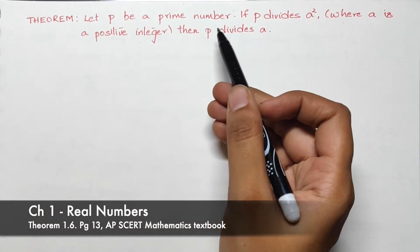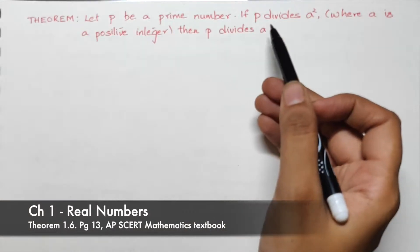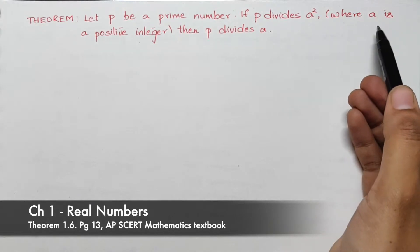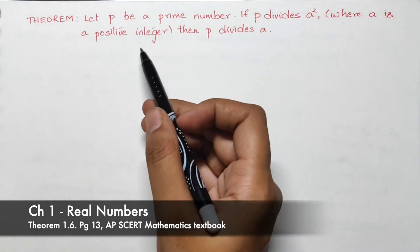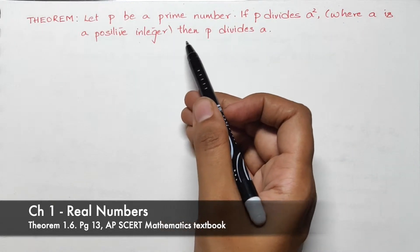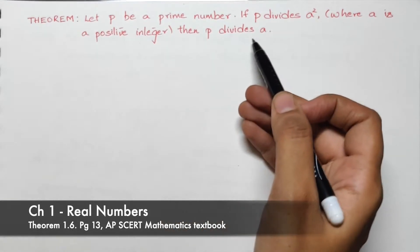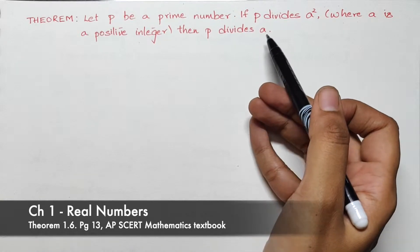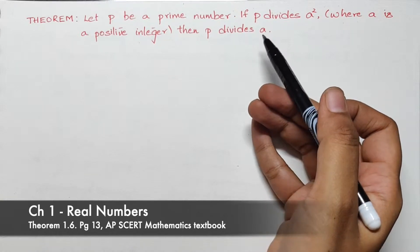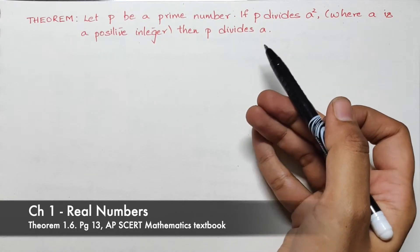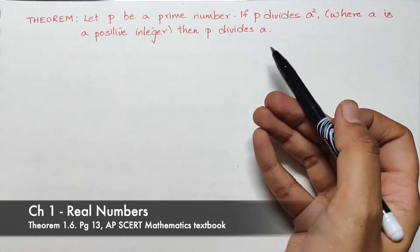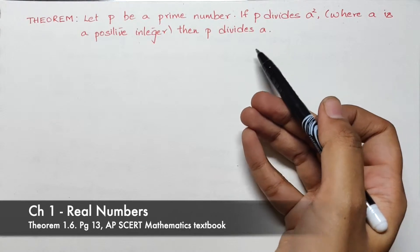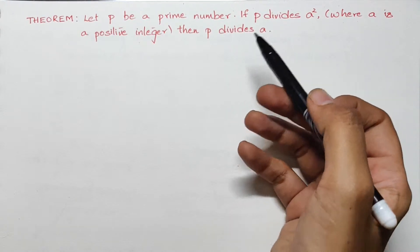Let p be a prime number. If p divides a squared, where a is a positive integer, then p divides a. So what does this theorem mean and how will this theorem be useful in proving irrational numbers? We shall see now.